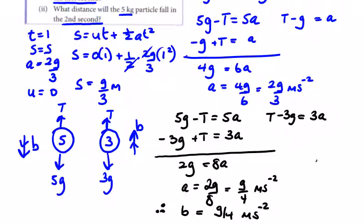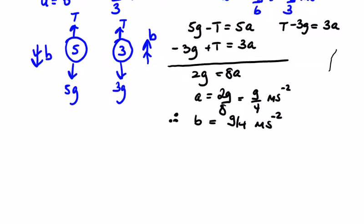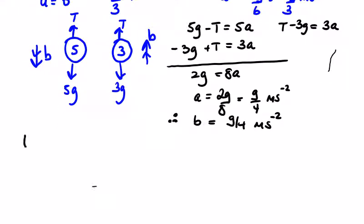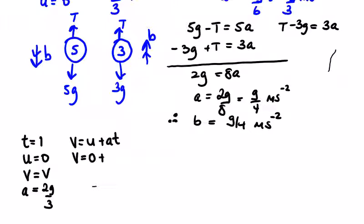Now we need the speed that it was traveling just before it picked up that new weight. So the speed in the first second, we have t equals 1, starting from rest, we're looking for the speed v. The acceleration in the first part was 2g over 3. So v equals u plus at. The speed after 1 second is 2g over 3 times 1, so 2g over 3 meters per second.